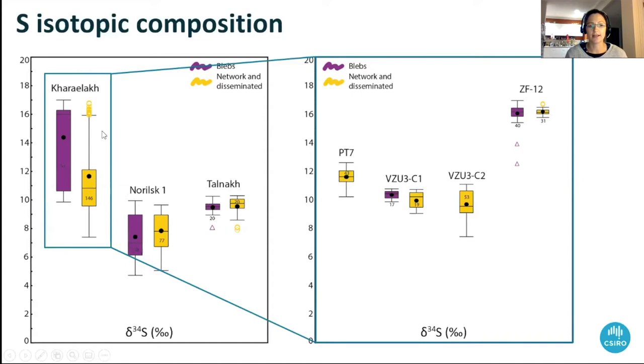This is Kharaelakh, just to zoom in here, where we had three different samples. You can see that even though it looks like there might be differences between disseminated and blebby here, within the Kharaelakh dataset this difference is just due to the fact that there's differences between samples, but not between the two different populations.